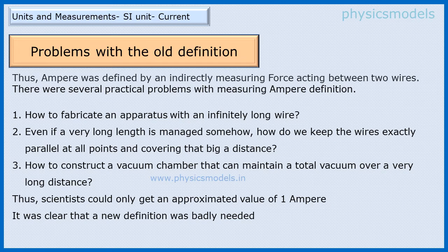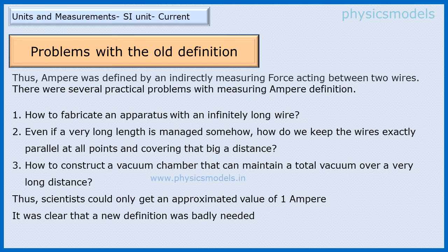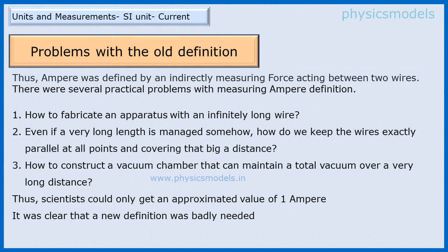The third challenge was to construct a vacuum chamber that can maintain a total vacuum over the entire length of this kind of wire. That's also a very big challenge. So with all these practical limitations, scientists could get one Ampere but with a limited amount of accuracy. It is very clear that a new definition was badly needed.